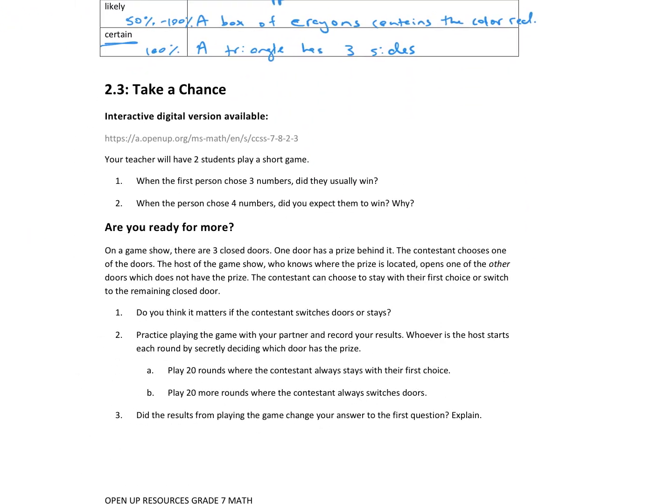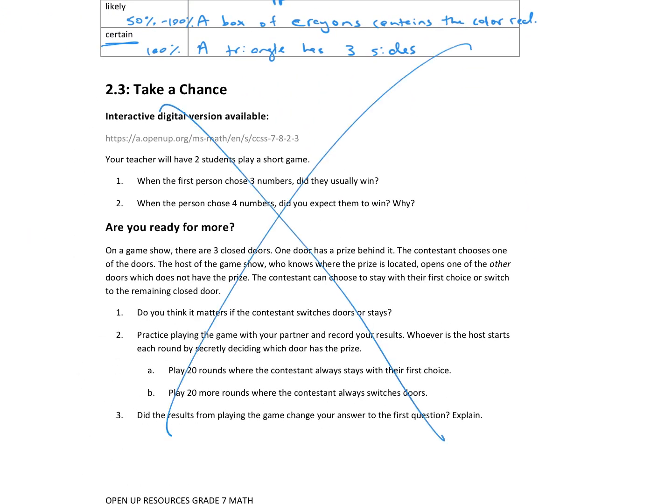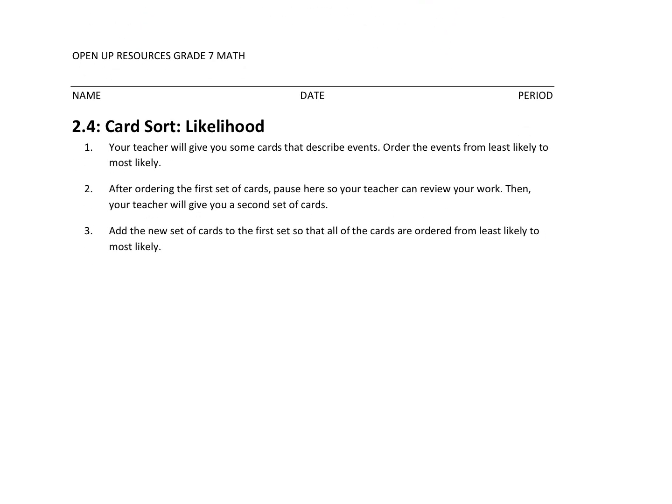All right, we're going to skip activity two, so you can cross that out. Let's move on to the card sort. Now, for the card sort, what you need to do is pause the video and click on the link on the homepage of Canvas. It will take you to the Desmos card sort. What you're going to do is there's two screens. For the first screen, you're going to order the cards from least likely to most likely. And then, once you've gotten that taken care of, you're going to go ahead and do it again with a new set of situations. So, go ahead, pause the video, work on that, and come back to here.